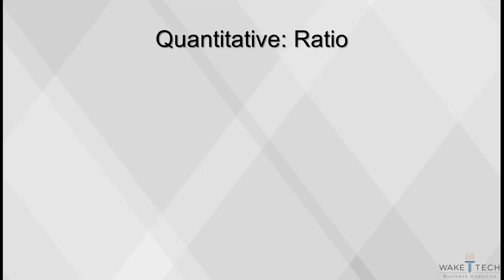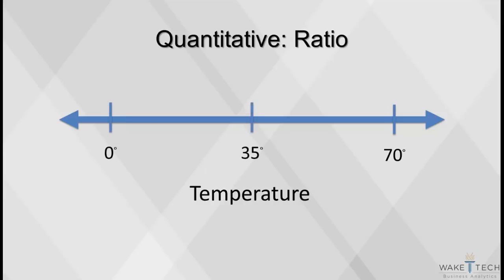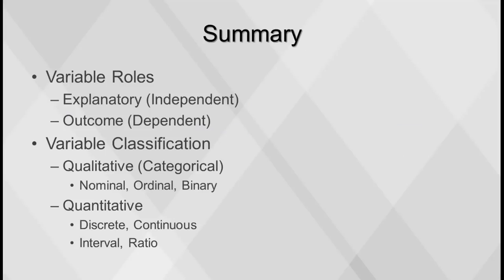Ratio variables are interval variables but with the added condition that zero of the measurement indicates there is none of that variable. True ratios exist when the same variable is measured on two different members of the population. For example, it makes sense to say a 150-pound adult weighs twice as much as a 75-pound child. However, it doesn't make sense to say 70 degrees Fahrenheit is twice as hot as 35 degrees Fahrenheit, so temperature is not a ratio variable.